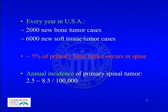Every year in the United States, there are about 2,000 new bone tumors diagnosed and about 6,000 new soft tissue tumors diagnosed. About 5% of primary bone tumors occur in the spine. The annual incidence of primary spinal tumor is about 2.5 to 8.5 per 100,000 population.